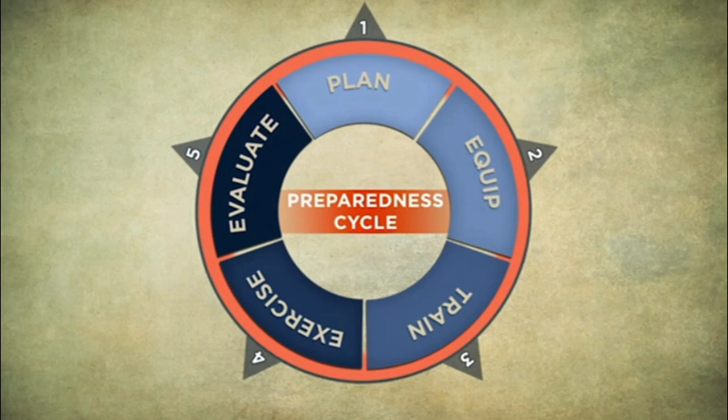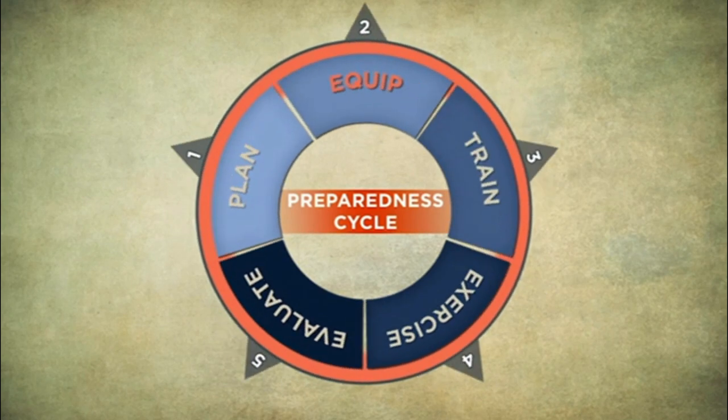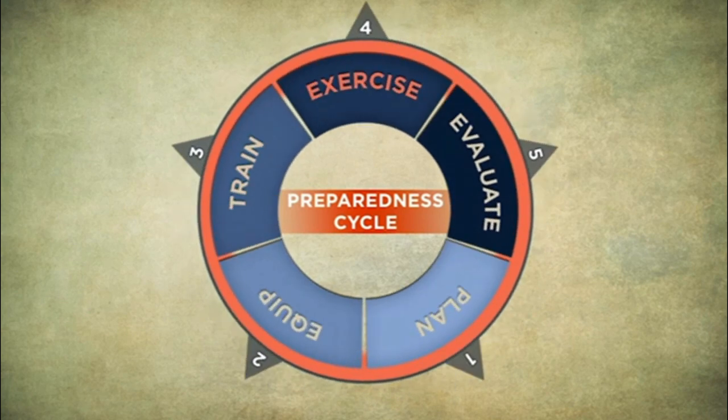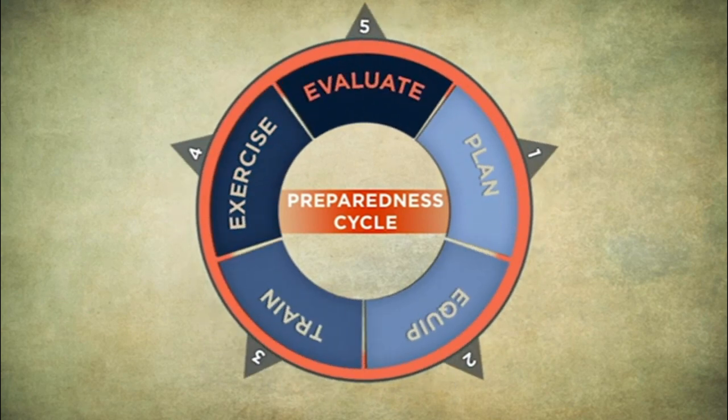The preparedness cycle tells us what to do next: plan, equip, train, exercise, and evaluate. The only certainty in life is death, taxes, and the fact that things will change. Re-evaluate your plans and preps. He says yearly — I say in spring and fall.